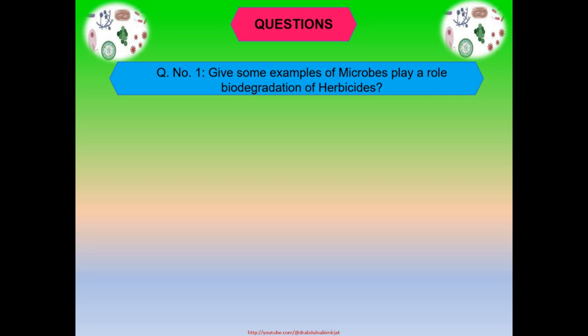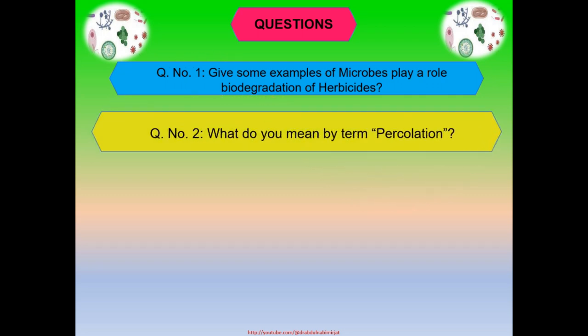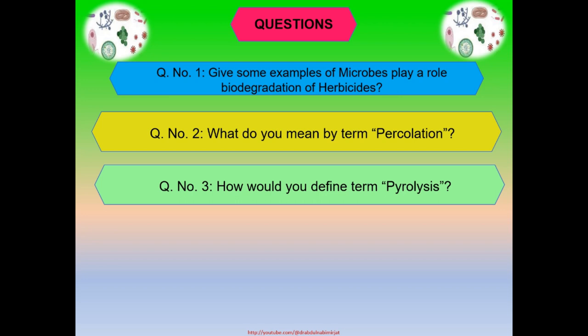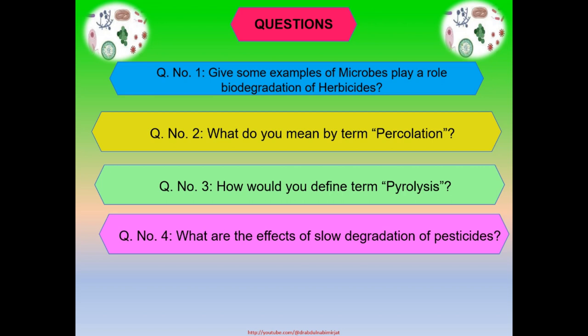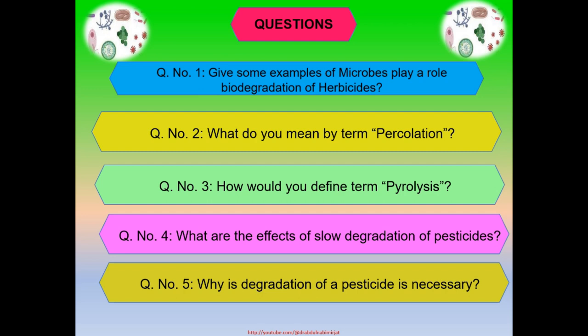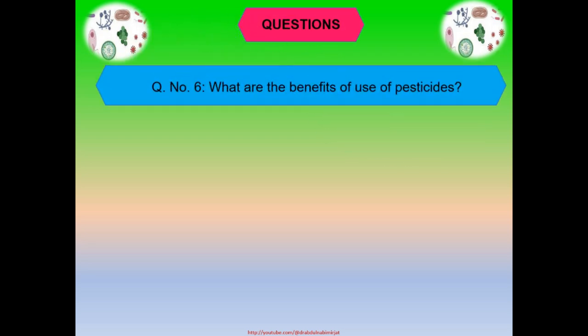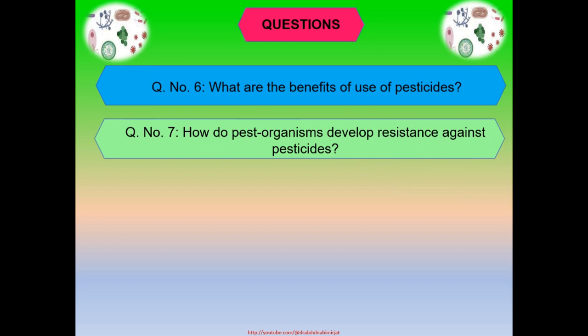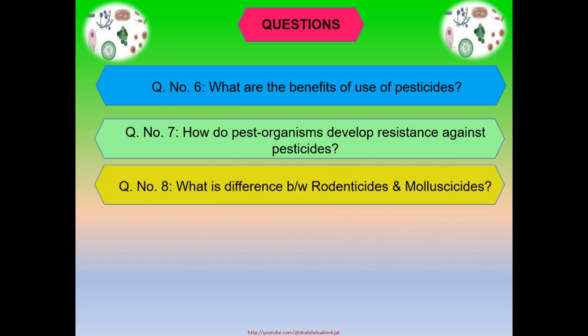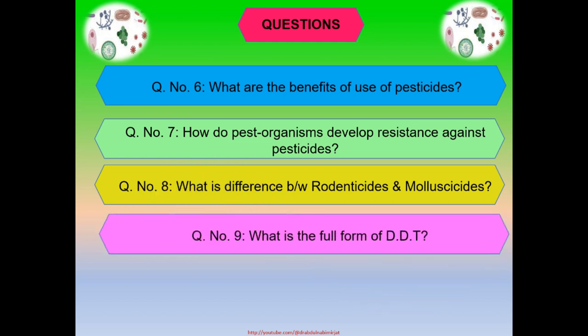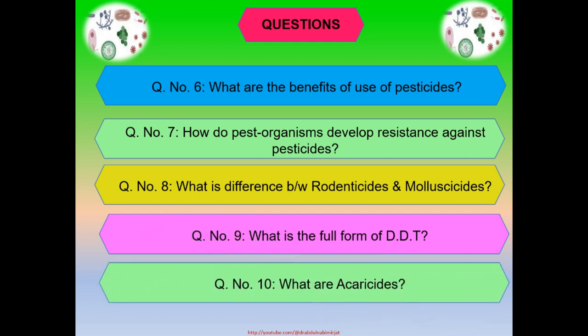Some important questions regarding this lecture: Give some examples of microbes which play a role in biodegradation of herbicides. What do you mean by the term percolation? How would you define the term pyrolysis? What are the effects of slow degradation of pesticides? Why is degradation of pesticides necessary? What are the benefits of use of pesticides? How do pest organisms develop resistance against pesticides? What is the difference between rodenticides and molluscicides? What is the full form of DDT? What are acaricides?